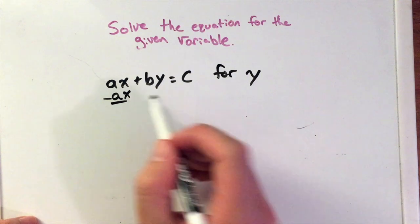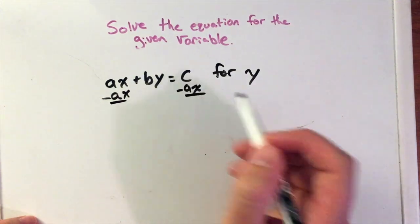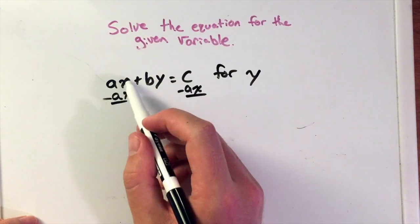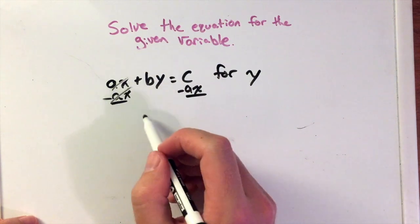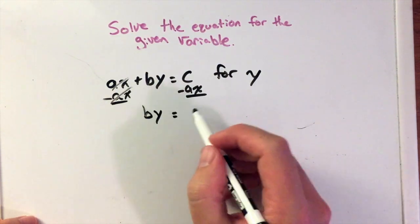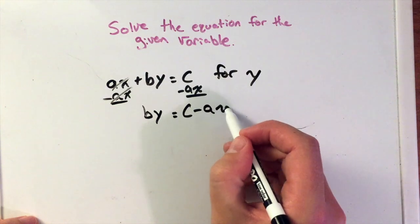We want to subtract ax from both sides. We subtract ax from ax, that cancels out and we have nothing left. We have by equals c minus ax.